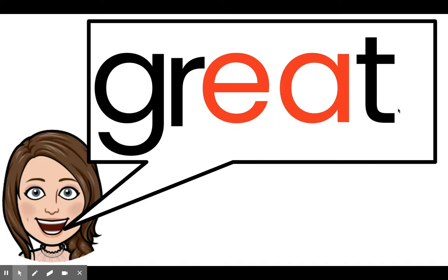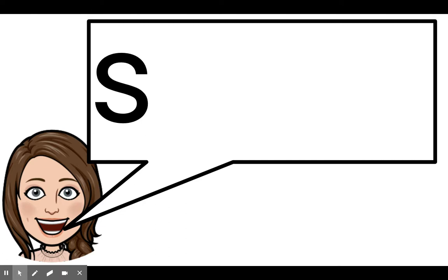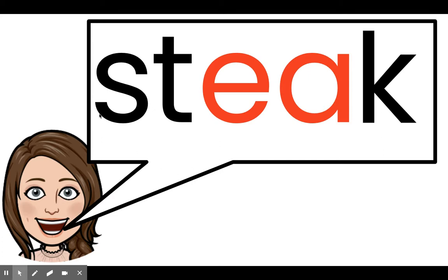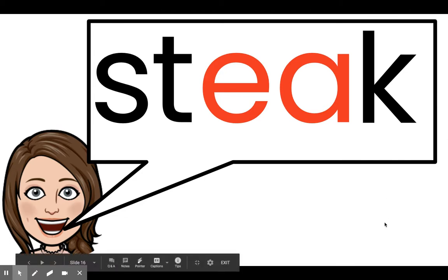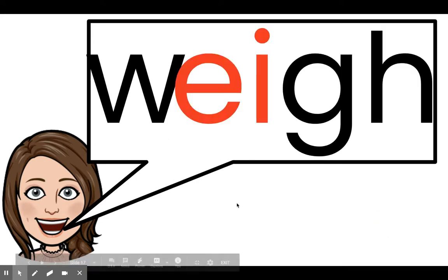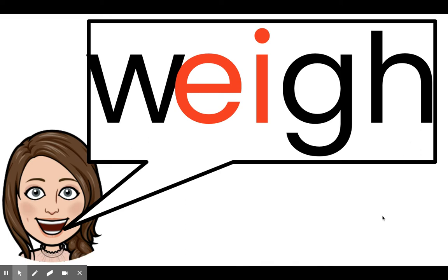Sound, sound, A — blend all these sounds: great. Read the word: great. You are doing a great job! This is the long A pattern E-A. Sound, sound, A — blend those sounds: steak. Read the word: steak. I can't wait to eat a juicy steak! Sound, A — blend: way. Read the word: way. This is the E-I pattern — remember that G-H is silent: way.